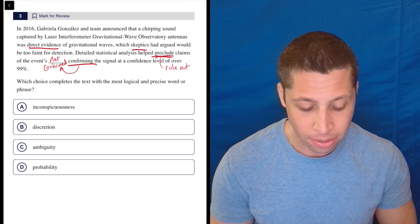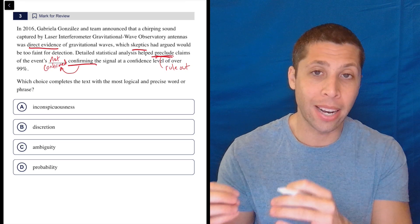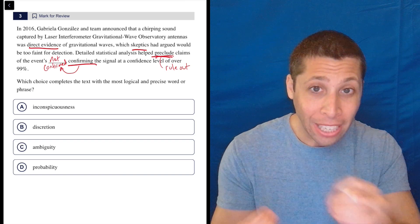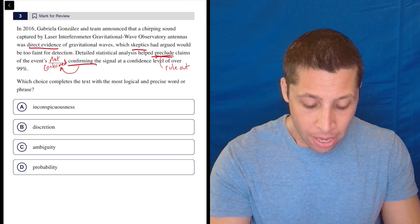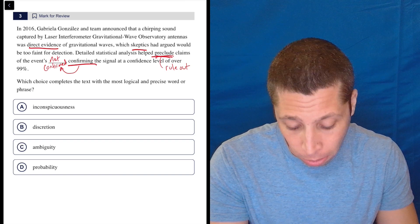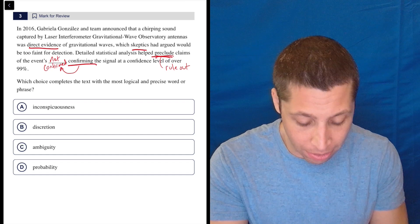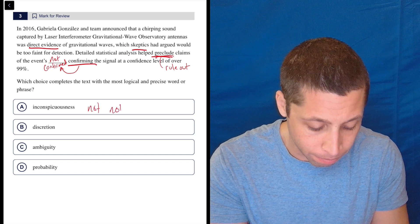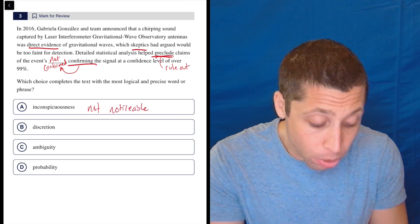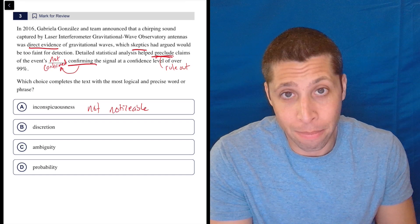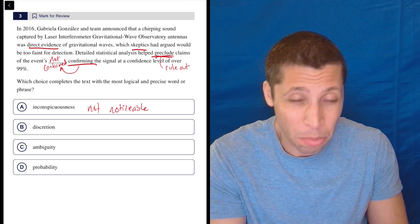But if I'm looking at that one sentence, we are ruling out the idea that it's not confirmed by confirming it. So are there things that mean not confirmed? Well, inconspicuous means not noticeable. And being noticeable is not about being confirmed or proven. So this just seems kind of random.